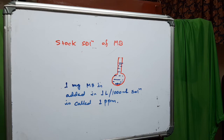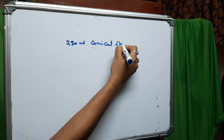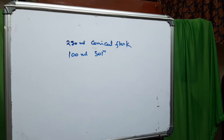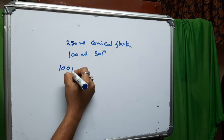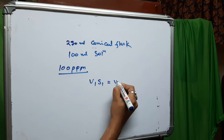Here we are taking a 250 ml conical flask and 100 ml solution. Suppose we want to make a 100 ppm solution from the stock solution using the formula V1 × S1 = V2 × S2.